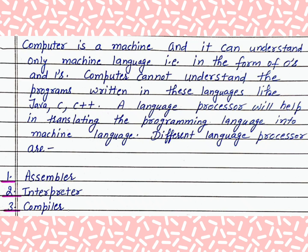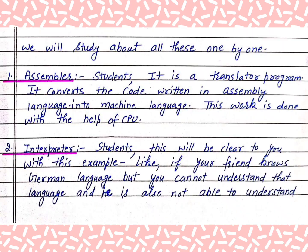A computer cannot understand programs written in languages like Java, C, and C++. A language processor helps in translating the programming language into machine language. The different types of language processors are: number 1, Assembler; number 2, Interpreter; number 3, Compiler. We will study about all these one by one.